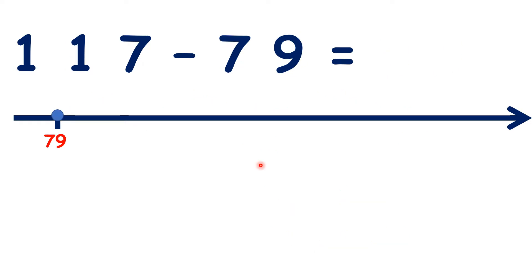So now let's try 117 minus 79 using the same method. The next multiple of 10 from 79 is 80, and that's just one more. Now what do we need to add to 80 to get 100? We need 20 more, because 80 plus 20 is 100.